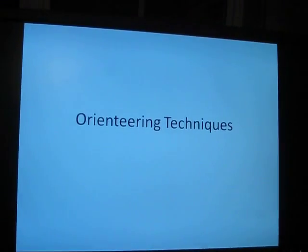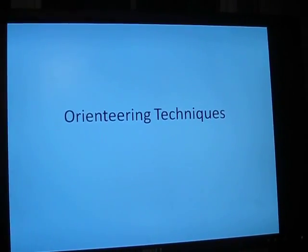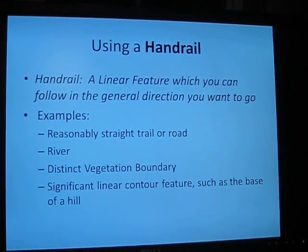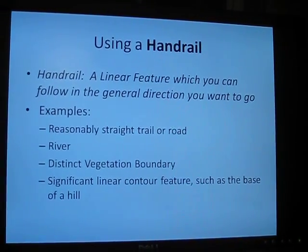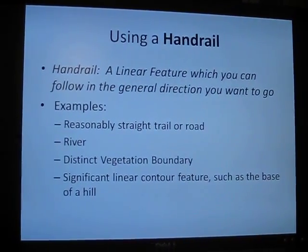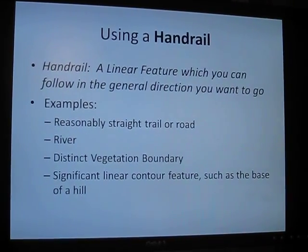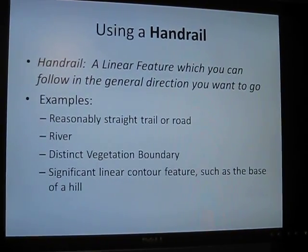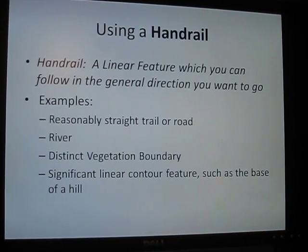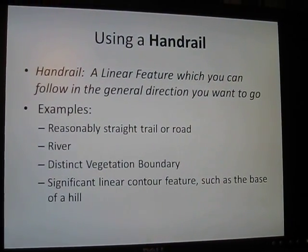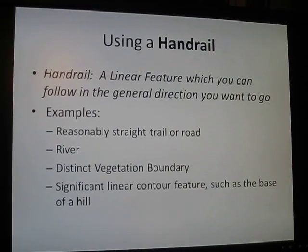Hi, I'm Rick and this is Kelsey, and we're going to demonstrate the effective use of handrails while orienteering. Handrails is one of the orienteering techniques. First, the definition: a handrail is a linear feature which you can follow in the general direction that you want to go. Examples of handrails are reasonably straight roads or trails, rivers or streams, distinct vegetation boundaries, or significant linear contour features such as the base of a hill.